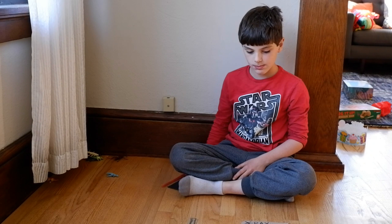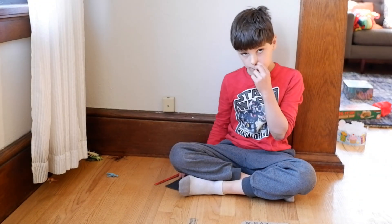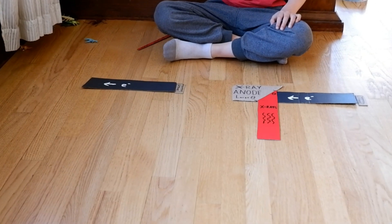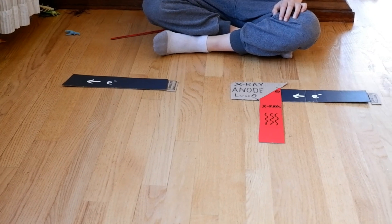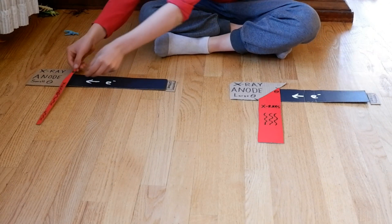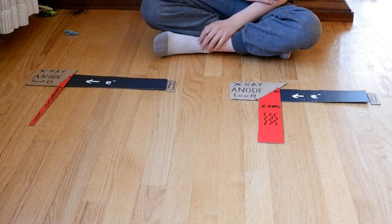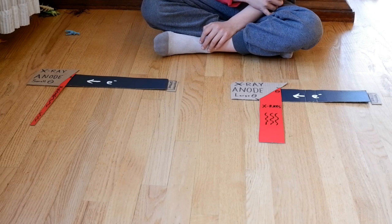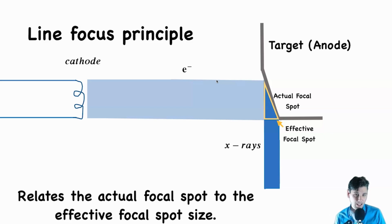Now we're going to compare that relatively large target angle to a small target angle case. You can see here's the electron beam coming out of the cathode — the actual focal spot size is staying the same size. Then our electron beam is now ramming into an x-ray tube with a small target angle, and you can see the width of our x-ray beam is much smaller. The amount of energy we deposit on the anode is actually the same because the width of our electron beam is the same, but because we have a smaller target angle, the effective spot size that the patient will see is significantly smaller.